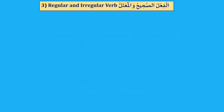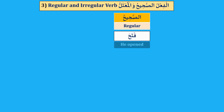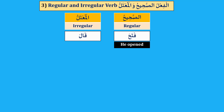Number three: al-Fi'l al-Sahih wa al-Mu'tal, regular and irregular verb, or sound and unsound verb. Al-Sahih, regular verb — fatahah, he opened. Al-Mu'tal, irregular verb — qala, he said. If there is any mad letter, such as alif, waw, or ya, in the verb, it is called al-Mu'tal, irregular or unsound verb.